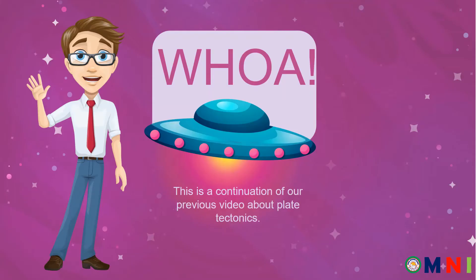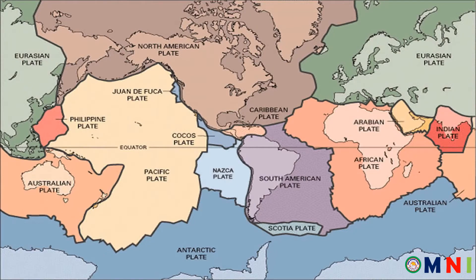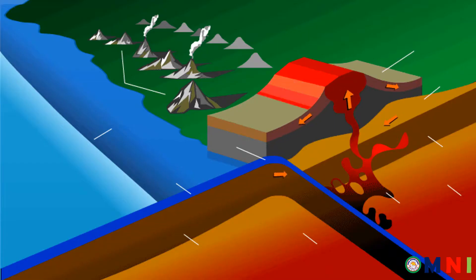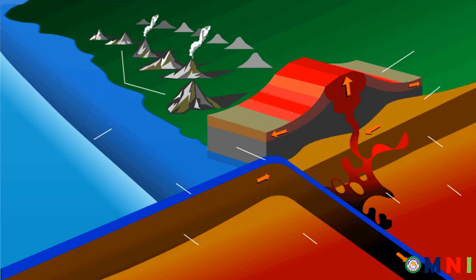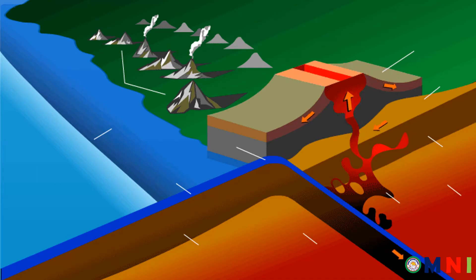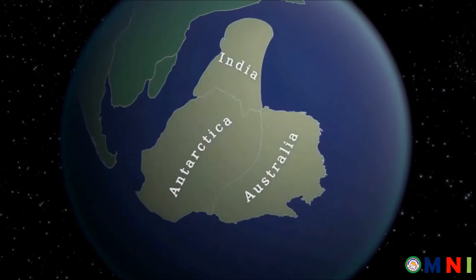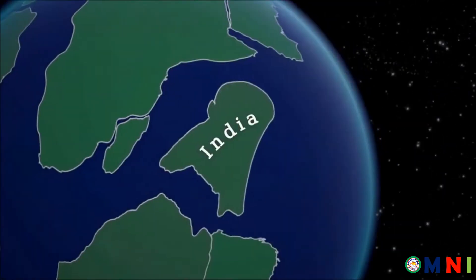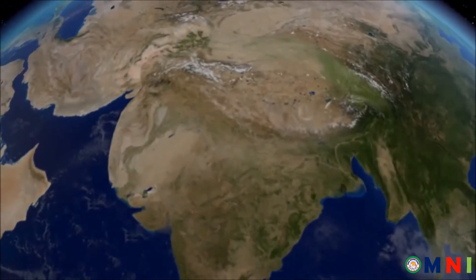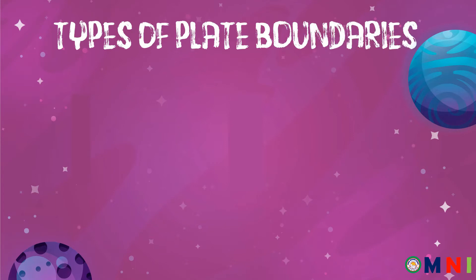In the previous video we discussed plate tectonics. This time, let's have the continuation and we will be talking about plate boundaries. As we all know, the places on Earth where most of the mountains, volcanoes, and earthquakes originated were formed along the plate boundaries. Plate boundaries are the edges where two plates meet, and each plate is slowly moving relative to each other, causing geologic events to happen. Today we will be talking about the different types of plate boundaries.